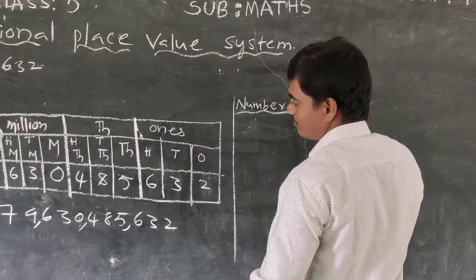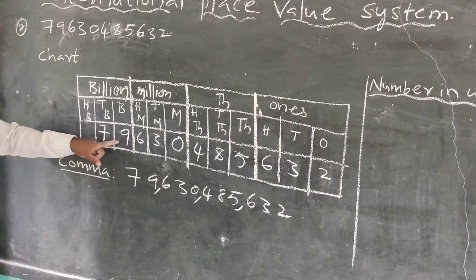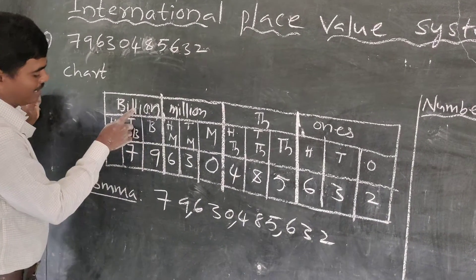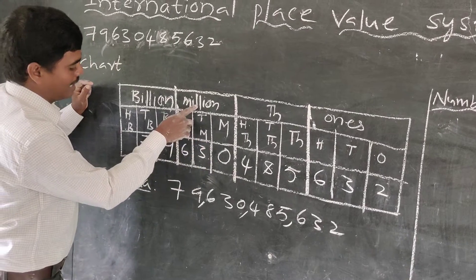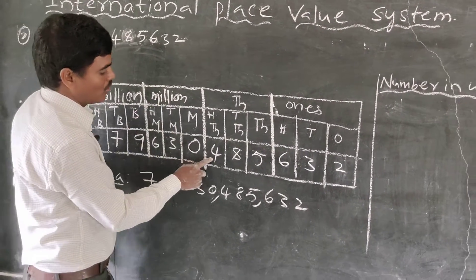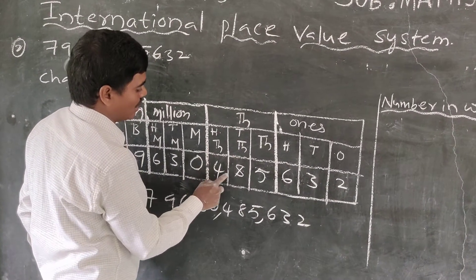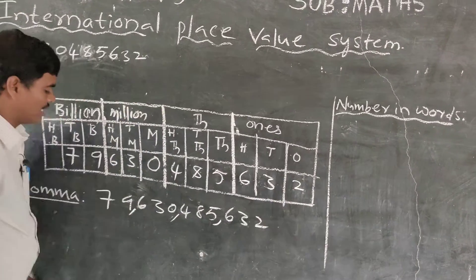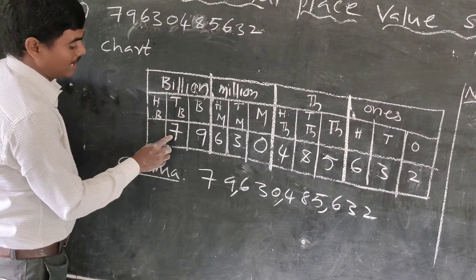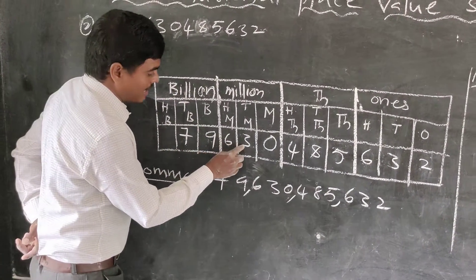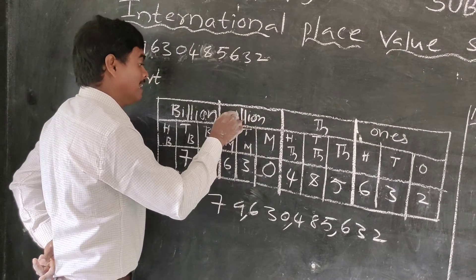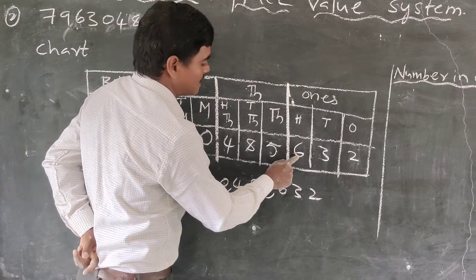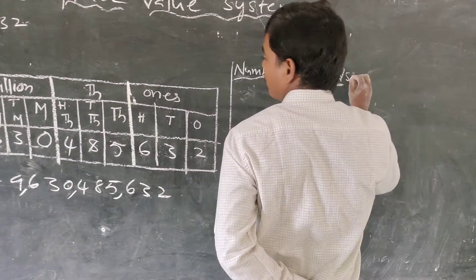Now write the number in words. First, the billions period: seventy-nine. Which period? Billions. So seventy-nine billions. Next, the millions period: six hundred thirty millions. Next, the thousands period: four hundred thirty-five thousand. Finally, the ones period: six hundred thirty-two.